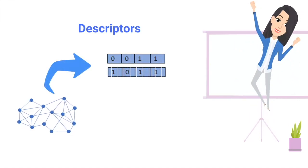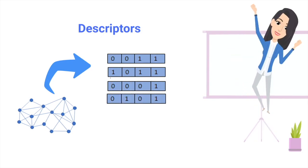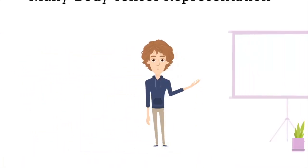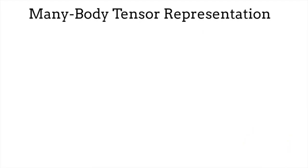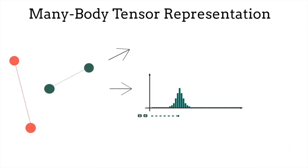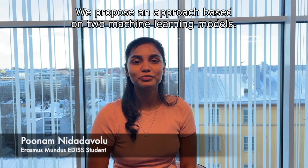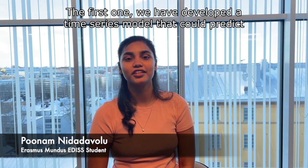They make sure each design of the nanoparticle has the same representation regardless of its rotation or permutation. The chosen descriptor is called Many Body Tensor Representation, or shortly MBTR. The MBTR descriptor can extract the global properties of the nanoparticle using different element pairs and their intra-atomic distances.